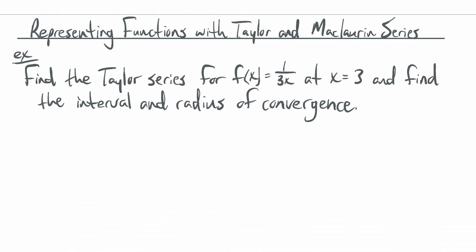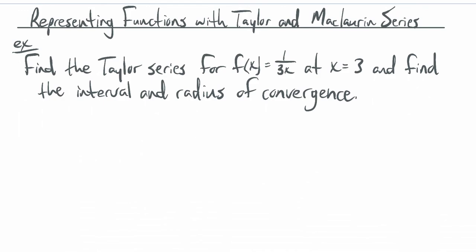Next, representing functions with Taylor and McLaurin series — not just polynomials as approximations, but using a series representation that gives you the actual function value. We're going to find the Taylor series for f of x equals 1 over 3x at x equals 3, and find the interval and radius of convergence.